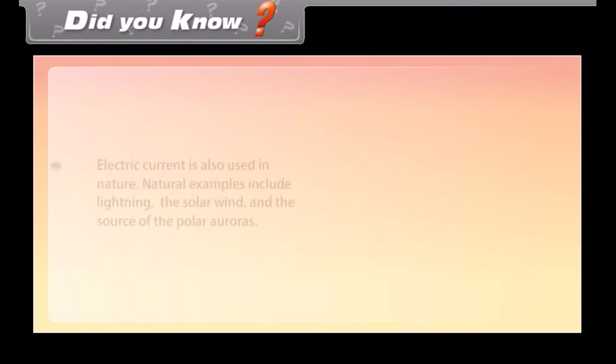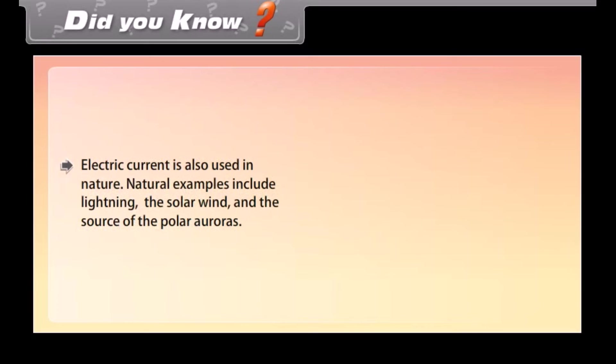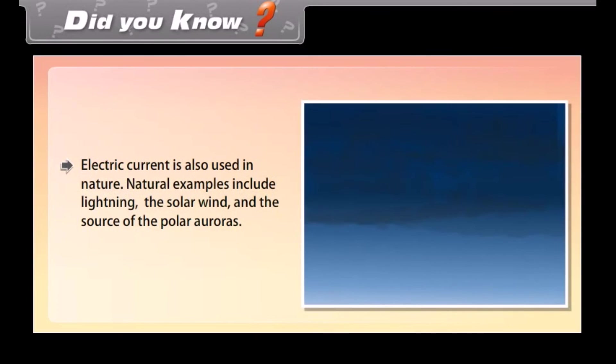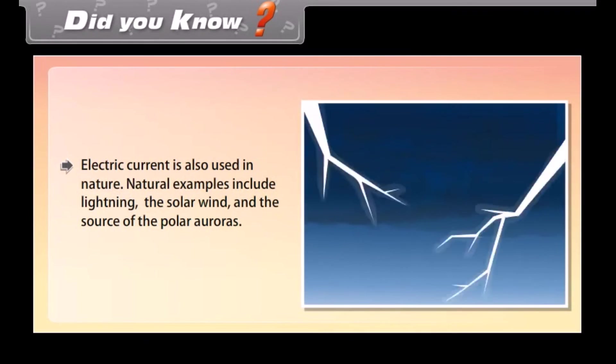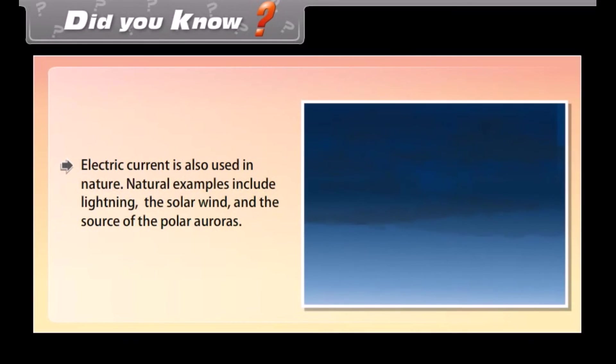Did you know? Electric current is also used in nature. Natural examples include lightning, the solar wind, and the sources of the polar auroras.